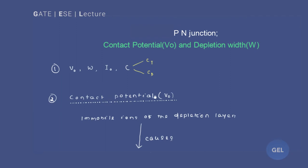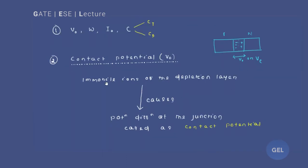Now let's start with contact potential. We know the contact potential concept. If we have a PN junction — this is P, this is N — now for the depletion layer, negative ions will be on the P side and positive ions will be on the N side. There will be generation of a potential barrier, that is V₀ or Vc, which is nothing but the contact potential. So immobile ions of the depletion layer cause a potential difference at the junction.